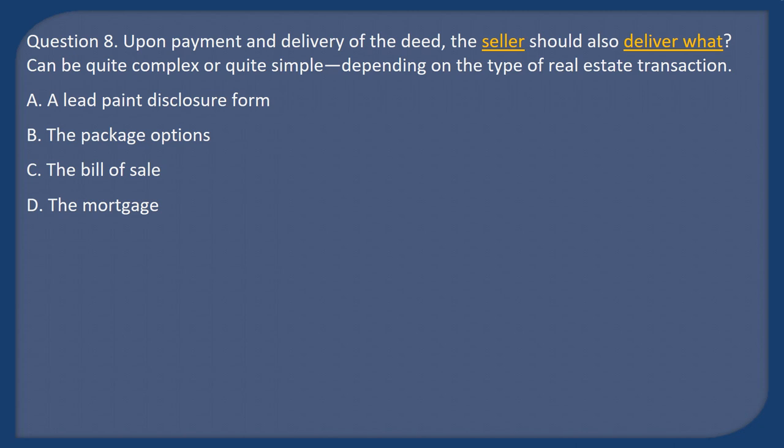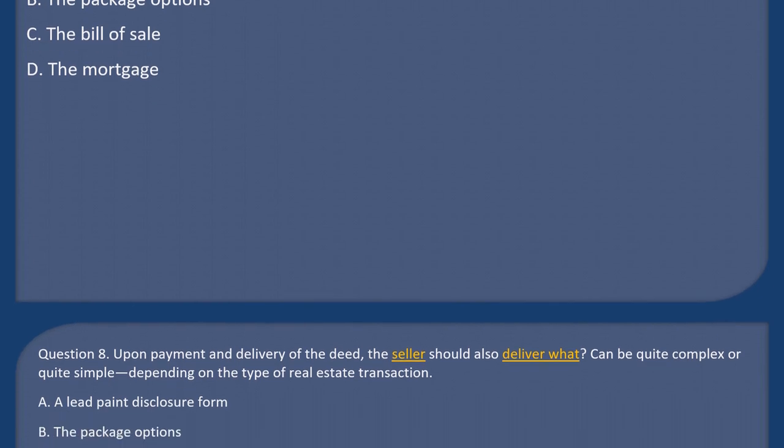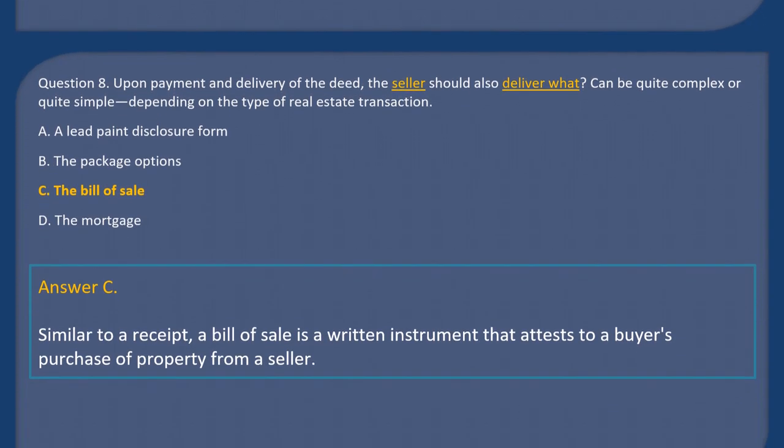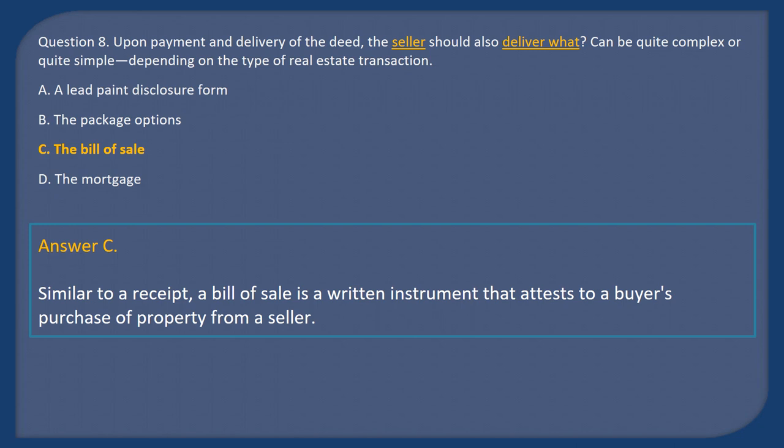Question 8: Upon payment and delivery of the deed, the seller should also deliver what — which can be quite complex or simple depending on the transaction type? A) A lead paint disclosure form, B) The package options, C) The bill of sale, D) The mortgage. Answer: C. Similar to a receipt, a bill of sale is a written instrument that attests to a buyer's purchase of property from a seller.